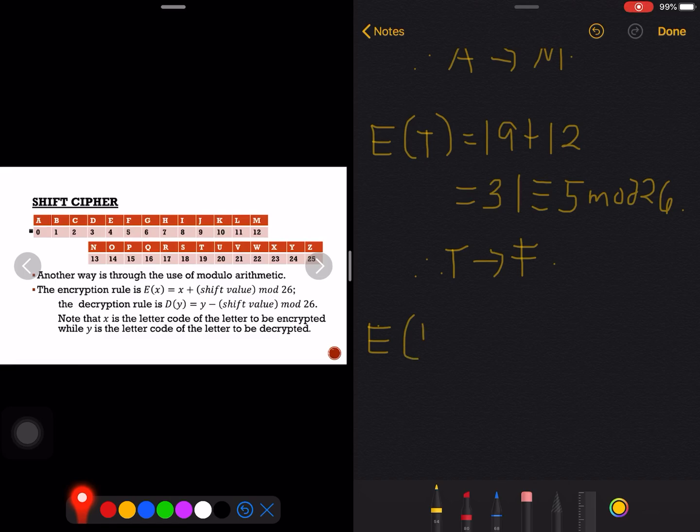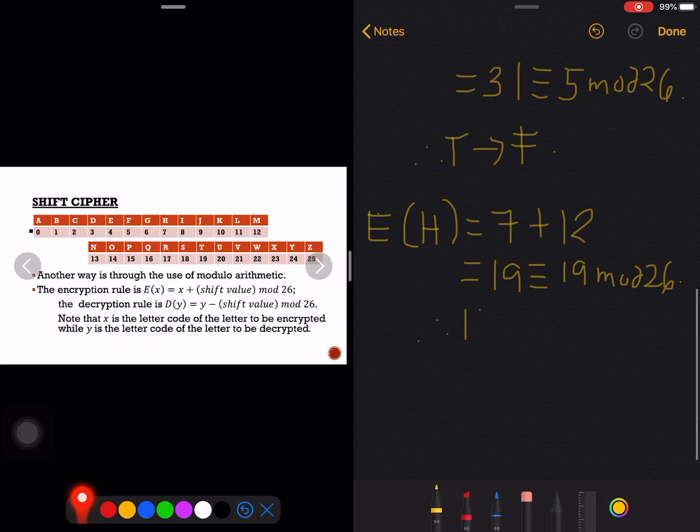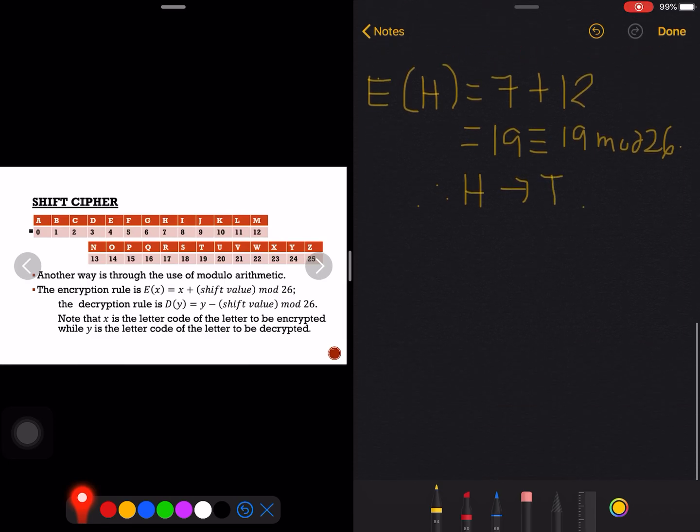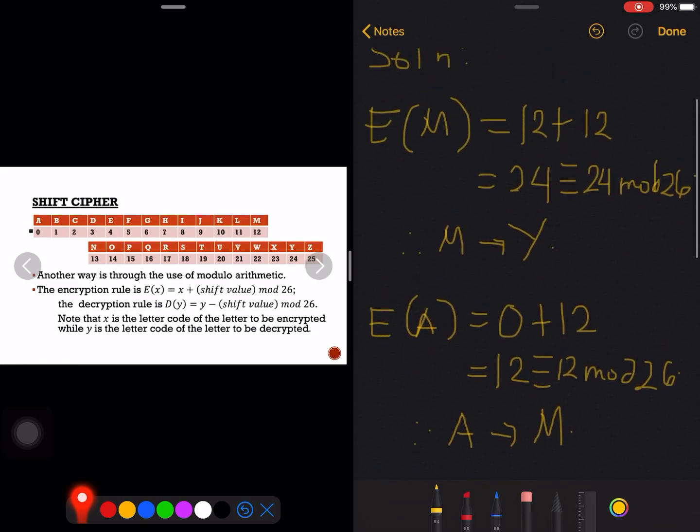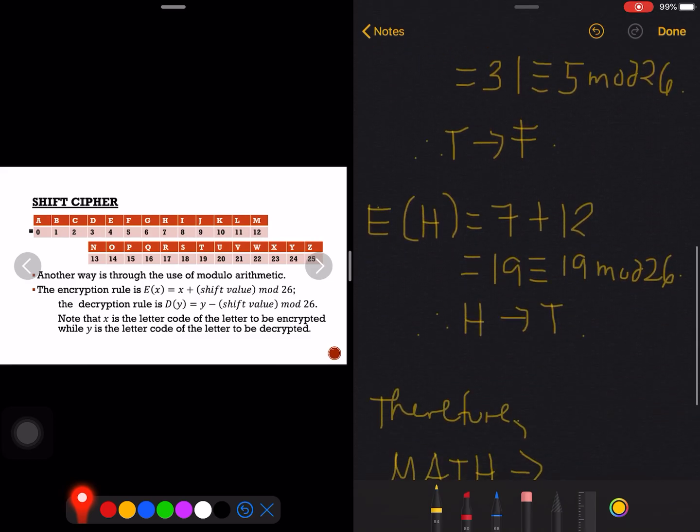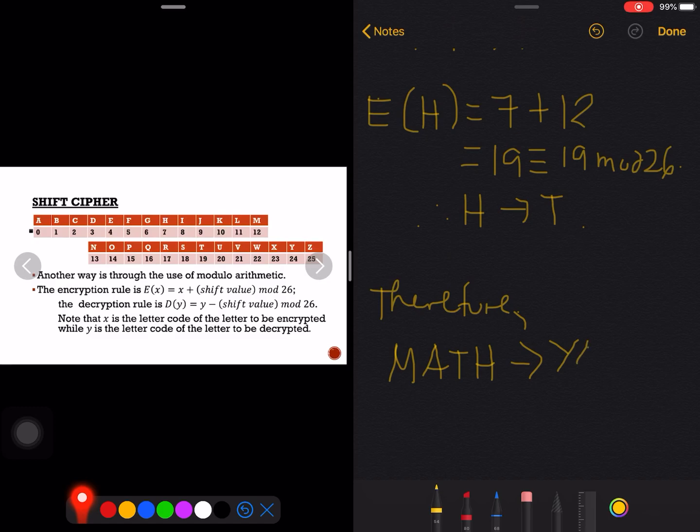So therefore T would become letter F. Lastly we are to encrypt H. H's code is 7 plus 12 would be 19, and 19 is congruent to still 19 modulo 26. So H would become the letter that owns 19 as its letter code, would be T. Therefore MATH would now become what? Our cipher text now would become Y M F T.